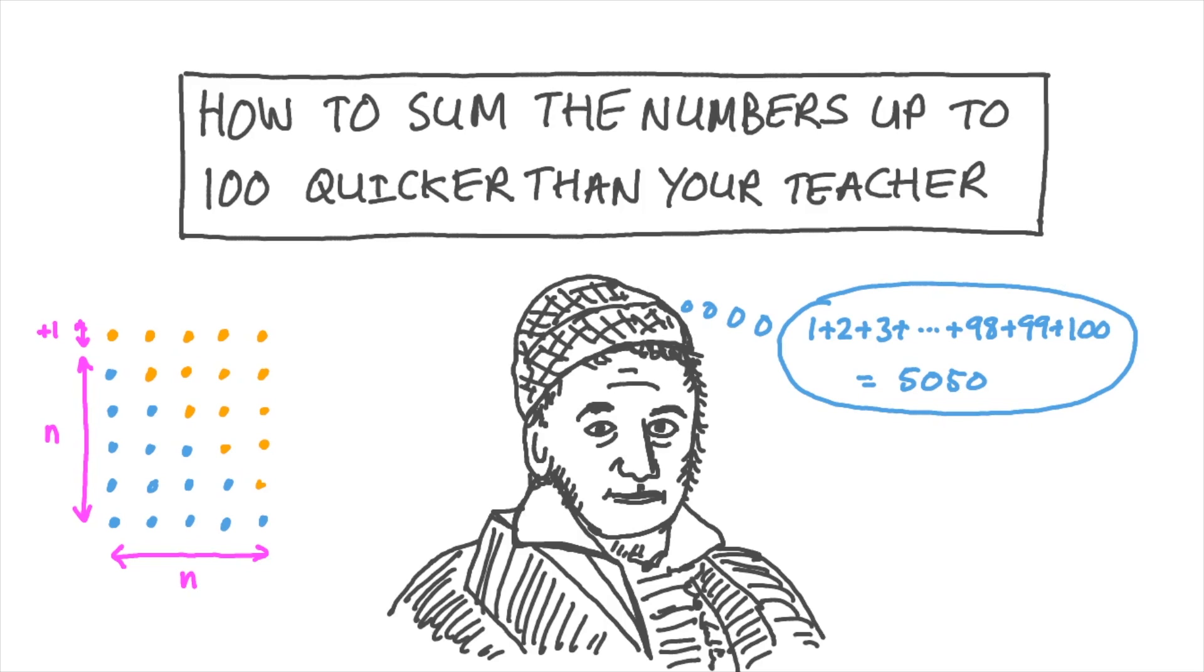If it hadn't been for his reluctance to show his working out in full, Gauss would probably have been my favorite mathematician ever. He was born in Germany in 1777 and showed an incredible aptitude for mathematics from a very early age.